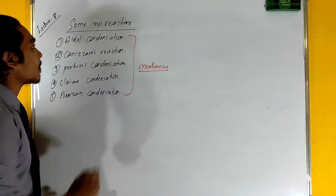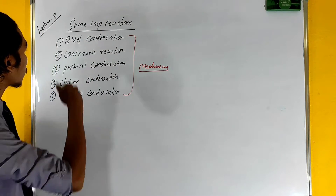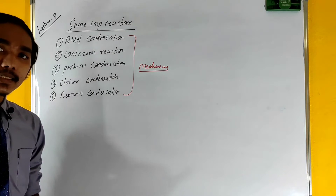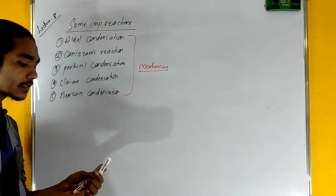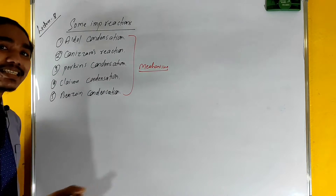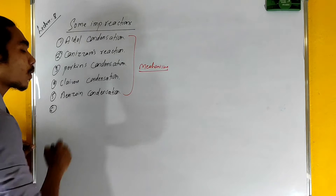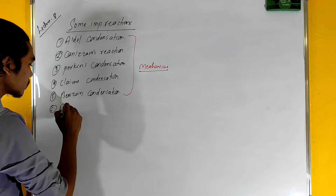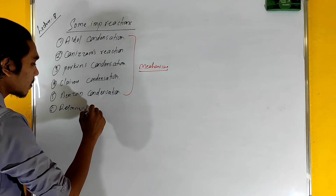First, we have an aldol condensation. We have a Cannizzaro reaction. We have a Perkin condensation, a Knoevenagel condensation, and a benzoin condensation. So we will take number six, the Rosenmund reduction.